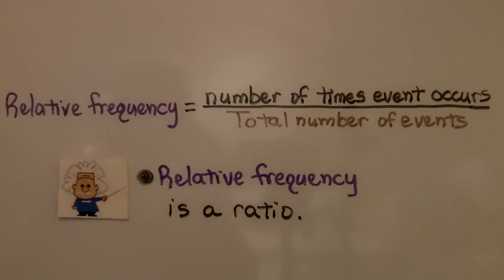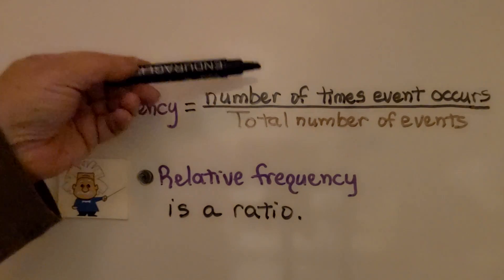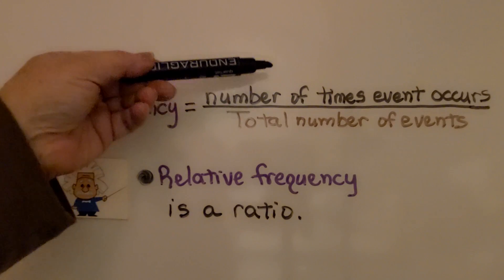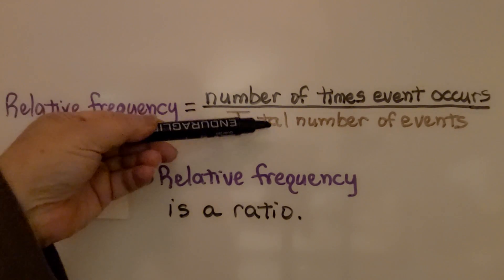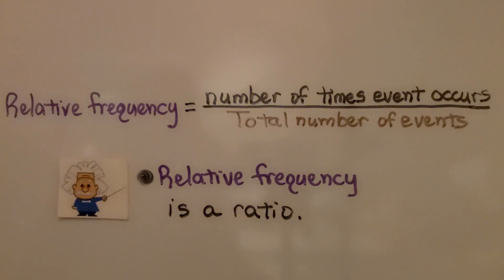So keep in mind that relative frequency is the number of times an event occurs divided by the total number of events. It's a ratio. Relative frequency is a ratio.